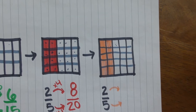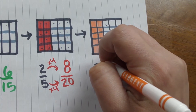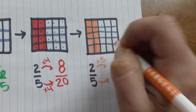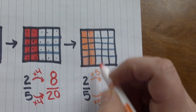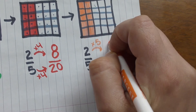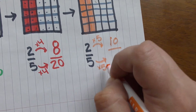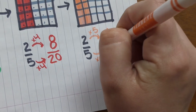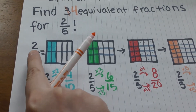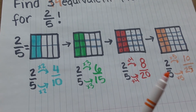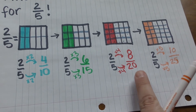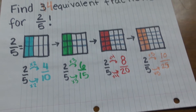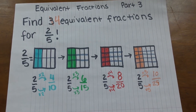To find that with multiplication, we're gonna multiply the numerator and denominator times five. Two times five is ten and five times five is twenty-five. So we found four equivalent fractions for two fifths: two fifths equals four tenths, six fifteenths, eight twentieths, and ten twenty-fifths. Very nice work.